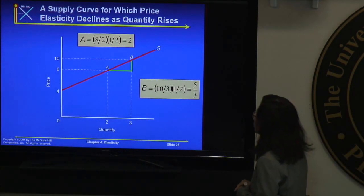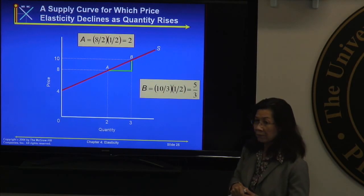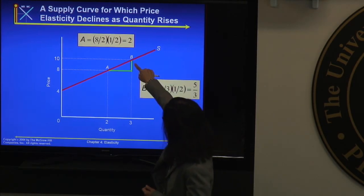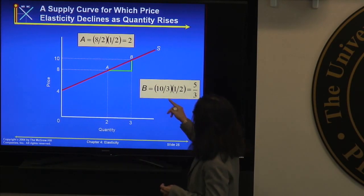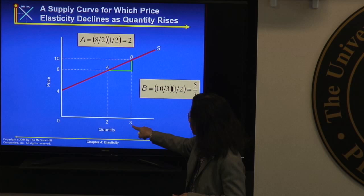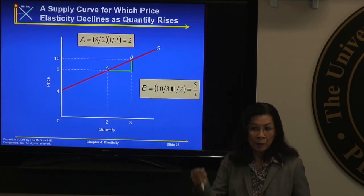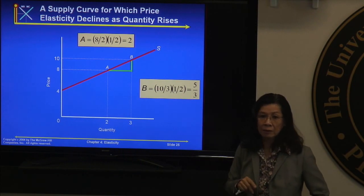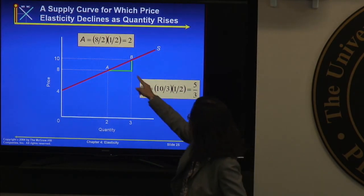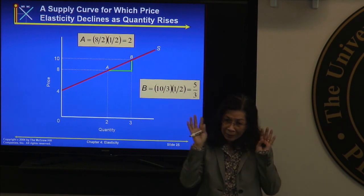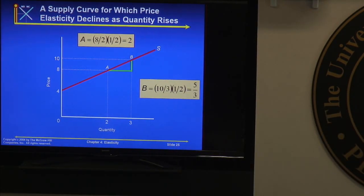At point B, price is 10 and quantity is 3. The vertical change is 10 minus 8 equals 2, and horizontal change is 3 minus 2 equals 1. Slope is 2 over 1 equals 2; reciprocal is one-half. P over Q is 10 over 3. Elasticity is one-half times 10 over 3, which is 1 and two-thirds. The slope is the same at both points, but the P over Q changes. Moving from A to B, price elasticity of supply decreases from 2 to 1 and two-thirds.